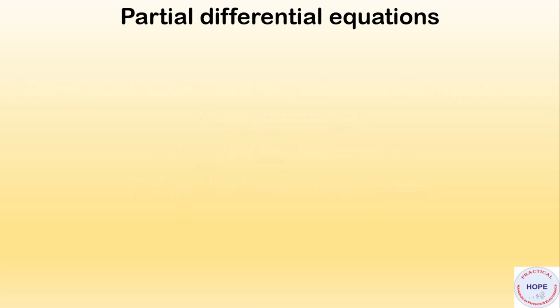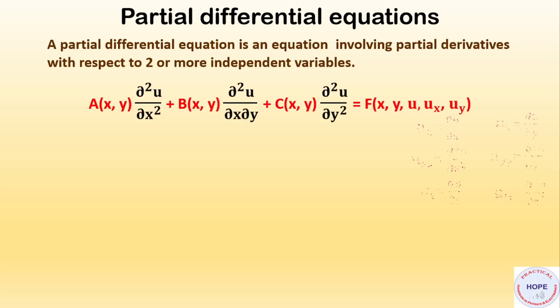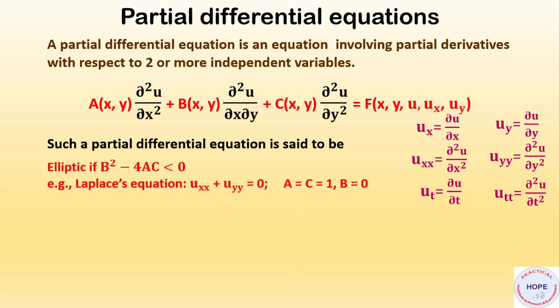First, what are partial differential equations? A partial differential equation is an equation involving partial derivatives with respect to two or more independent variables. This is the general form. Such a partial differential equation is said to be elliptic if B squared minus 4AC is less than zero. For example, the Laplace equation: u_xx plus u_yy equals zero, where A and C are 1 and B is 0.